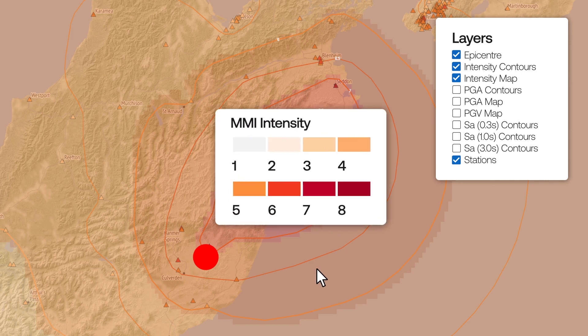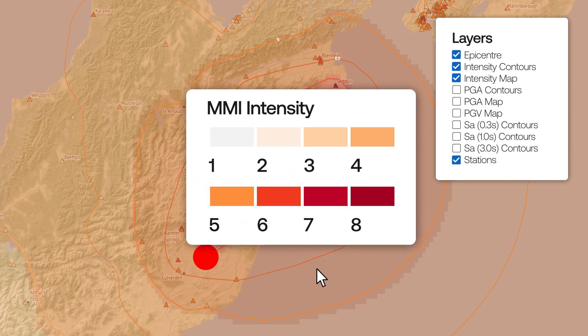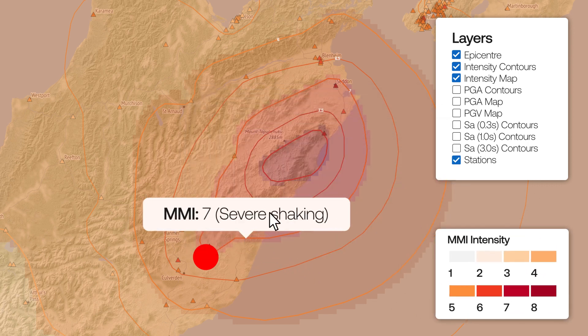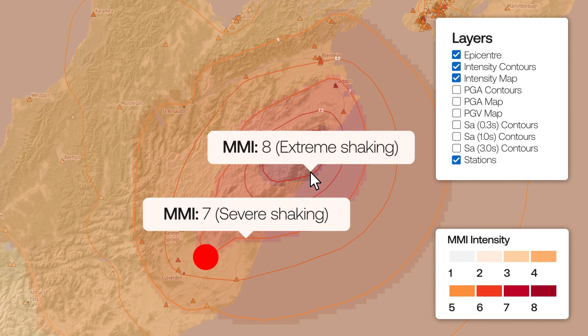The intensity of ground shaking scales up from unnoticeable to extreme. A legend at the bottom right of the map explains what kind of shaking the different colour shades reflect.